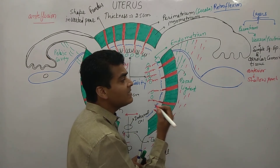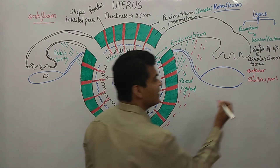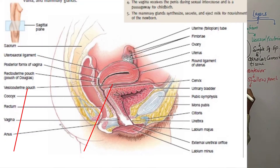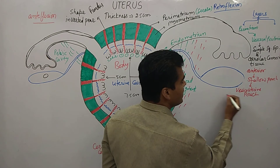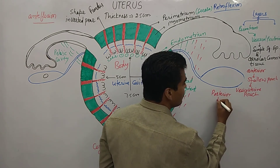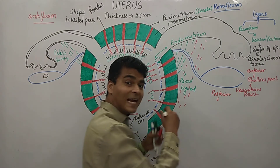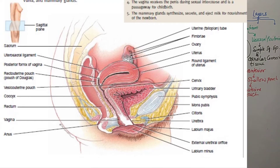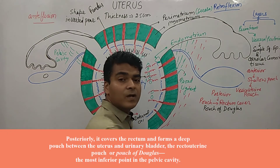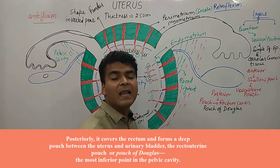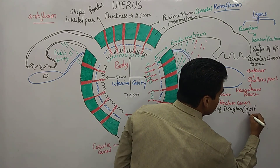The posterior portion of the perimetrium also forms a pouch that covers the rectum. This pouch is known as the pouch of Douglas, also called the recto-uterine pouch. It is the most inferior portion of the pelvic cavity.